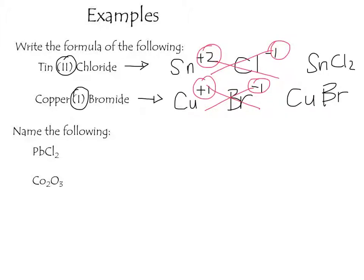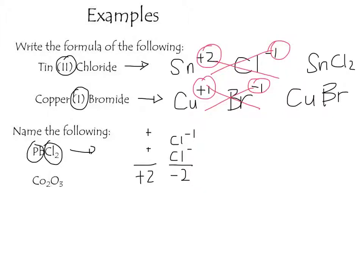Now going the opposite direction — from formula to name. Looking at PbCl2, we start with chlorine, the anion, which has a minus 1 charge. With two chlorines, the total anion charge is minus 2, so the cation must be plus 2. There is only one lead, so lead has a plus 2 charge. The name is lead(II) chloride.